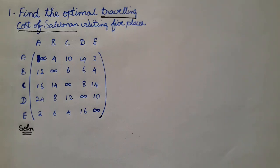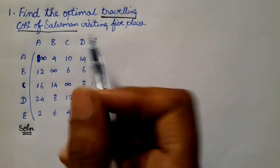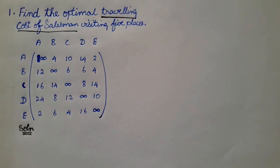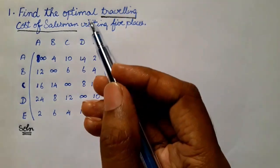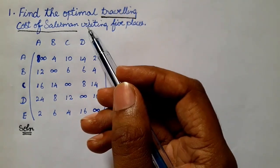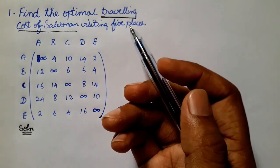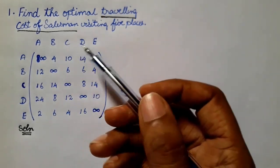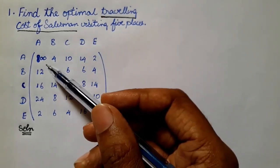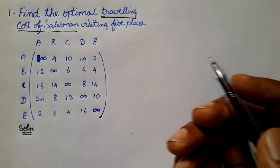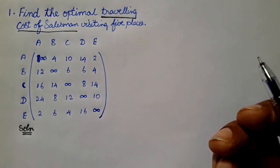In this video, let's see how the Traveling Cost of Salesman problem works. We will show you a question: Find the optimum traveling cost of a salesman visiting 5 places. In this question, you can see values a, b, c, d and infinity, 4, 10 data.